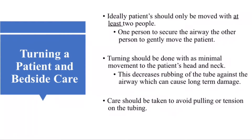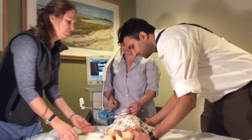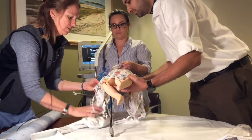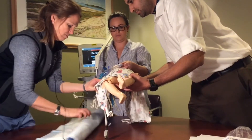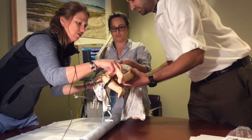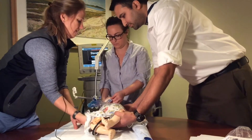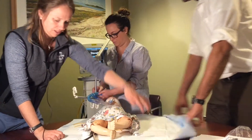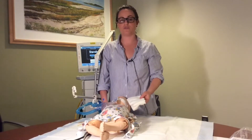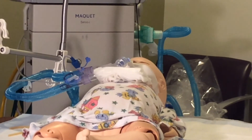Care should be taken to avoid pulling or tension on the tube. Another way to change the linen on an infant is to provide support and completely lift the child while someone stabilizes the ET tube. Pull the linen up from underneath, put fresh linen under, and then gently put the baby back down, ensuring the stability of the tube the entire time. To make sure there's not too much tension on the tubing, sometimes we put some gauze or padding underneath the end of the tube.